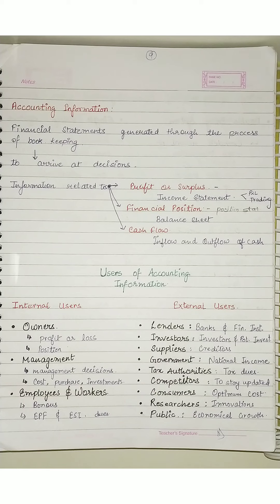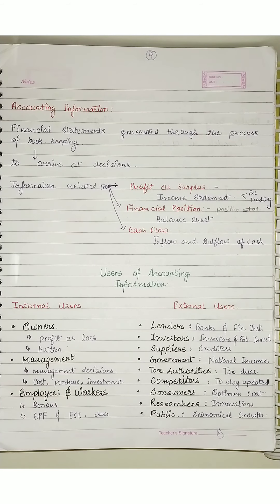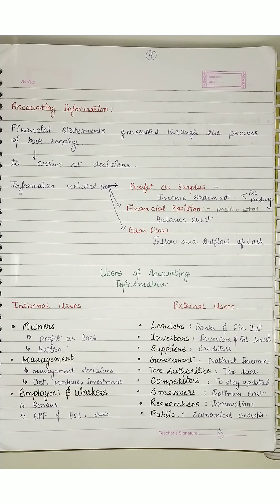Now about our competitors — if we want to know how far ahead our competitor is compared to us, we need a comparison. And to stay updated about our competitors, how will we find out? From accounting — from their accounting information, that is, from their financial statements.